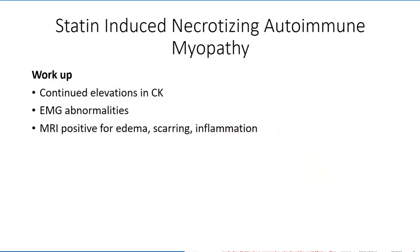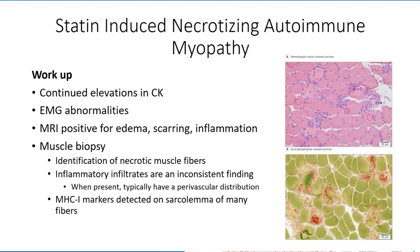A patient with statin-induced necrotizing autoimmune myopathy will present with persistent elevations in creatine kinase and continued abnormalities in EMG patterns months after discontinuing the medication. An MRI will also demonstrate regions of edema, scarring, and inflammation consistent with the patient's weakness pattern. Muscle biopsies are more commonly taken in this more persistent form of statin myopathy. There is a clear presence of necrotic muscle fibers with many other fibers demonstrating MHC markers. Inflammation is a less consistent finding in this patient group, and when present, it tends to be restricted to the perimysium surrounding arterioles feeding the tissue.